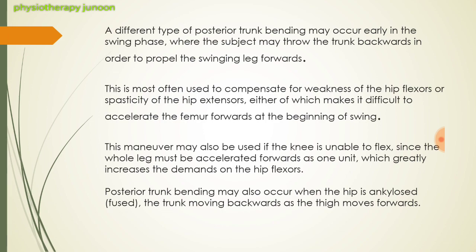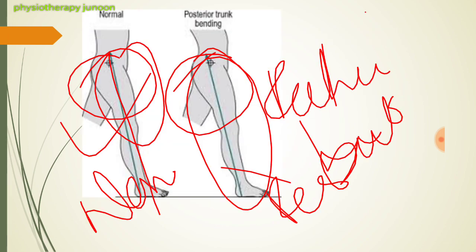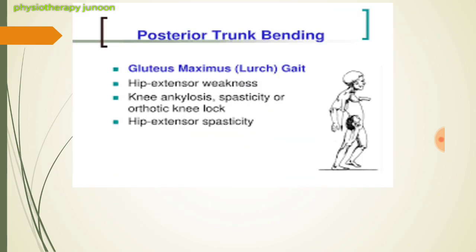Posterior trunk bending may also occur when the hip is ankylosed or fused, with the trunk moving backward as the thigh moves forward. Causes of posterior trunk bending include gluteus maximus or hip extensor weakness, knee ankylosis, spasticity, orthotic knee lock, and hip extensor spasticity.